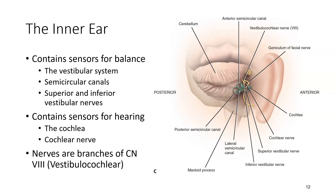The inner ear contains our sensors for balance, which are referred to as the vestibular system. The most important part of the vestibular system can be seen in the semicircular canals, which detect movement of the head in different directions. These innervate the superior and inferior vestibular nerves.